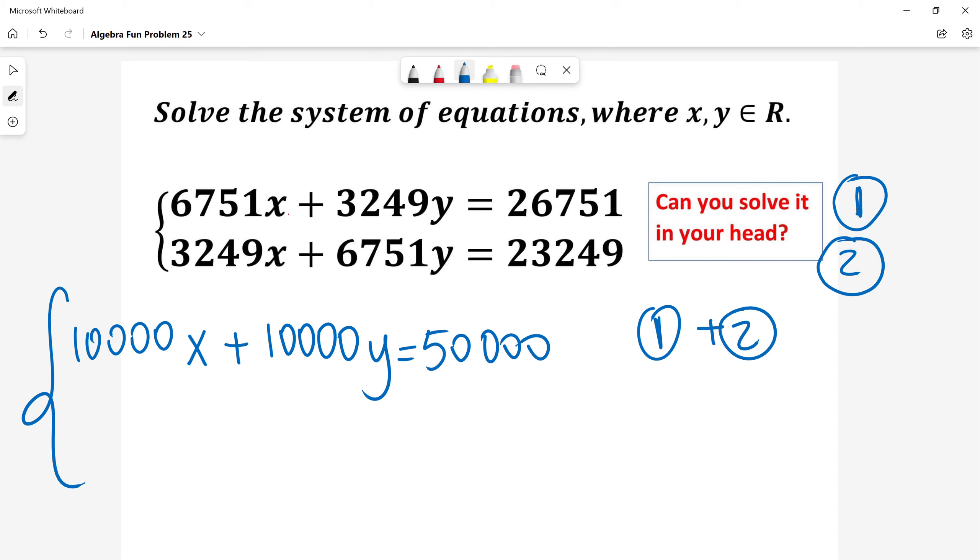Similarly, if I do 1 minus 2, so if I subtract sides of those two equations, I will get 3,502x minus 3,502y, this is equal to 3,502.